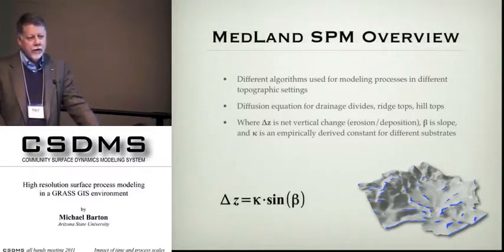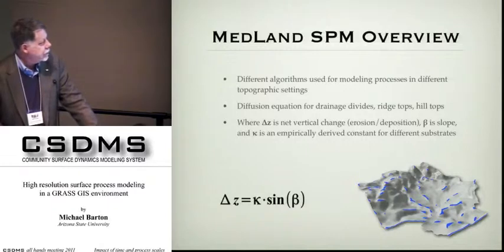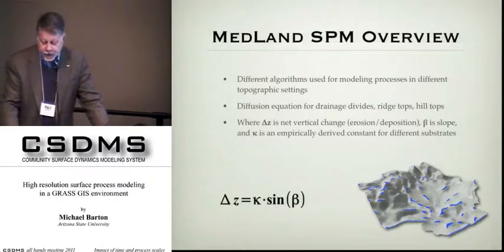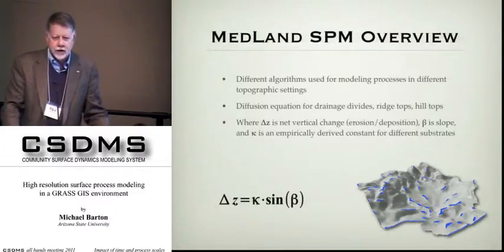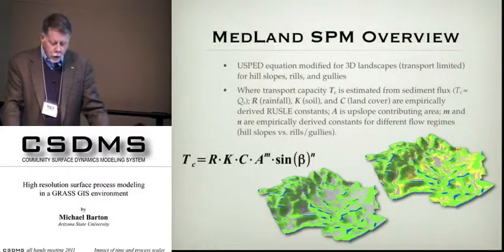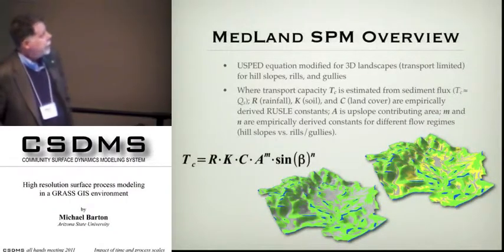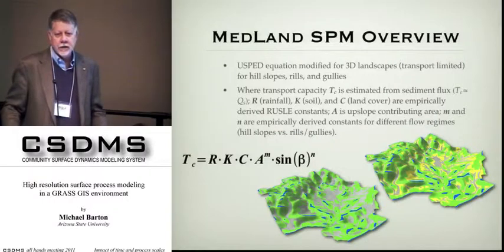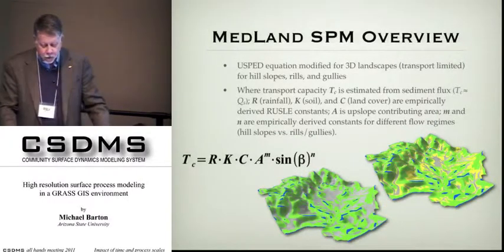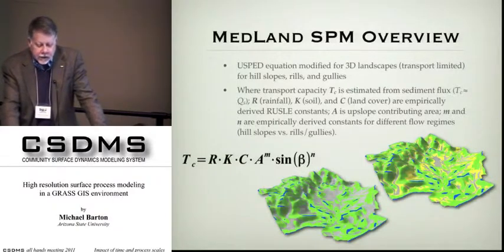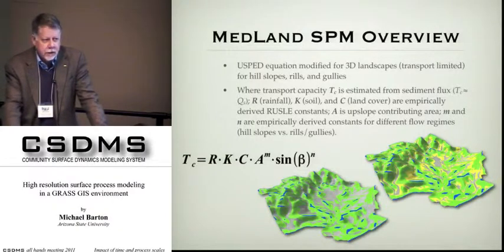For drainage divides, ridgetops, and hilltops, we use the standard diffusion equation — just enough math to be dangerous, as Rudy Slingerland said the other day — and diffusion will give us net vertical change. When we get to hillslopes, rills, and gullies, we use a modified version of unit stream power erosion-deposition that's been modified for 3D landscapes by Helena Mitas-Mitasova, one of my co-authors. It has different exponents — the m and n exponents — depending on whether we're in hillslopes or rills and gullies.